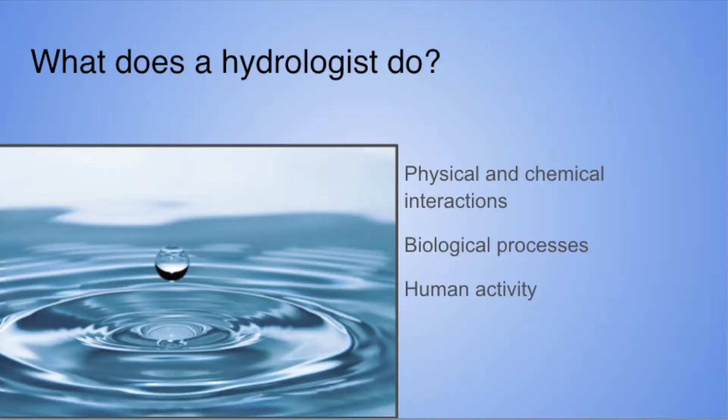What does a hydrologist do? Some main focus areas are the physical and chemical interactions of water with minerals, biological processes, and human activities that affect the movement, quality, and distribution of water.